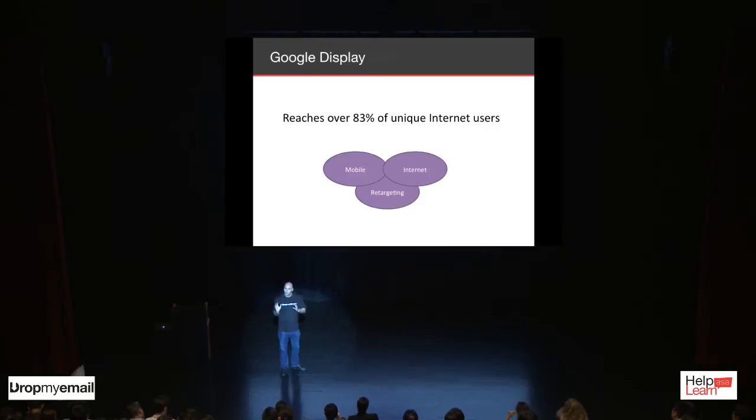Most websites run Google AdSense at some point and you can get most of the traffic you want out of that. Google is a beast — it's got mobile, internet, and retargeting. I suggest you start out with internet, because mobile is crazy scary. Unless you're doing mobile app-specific stuff, it's really hard to get a lot of clicks and impressions, and if your website is not specifically targeted to mobile, it'll just go down the drain.